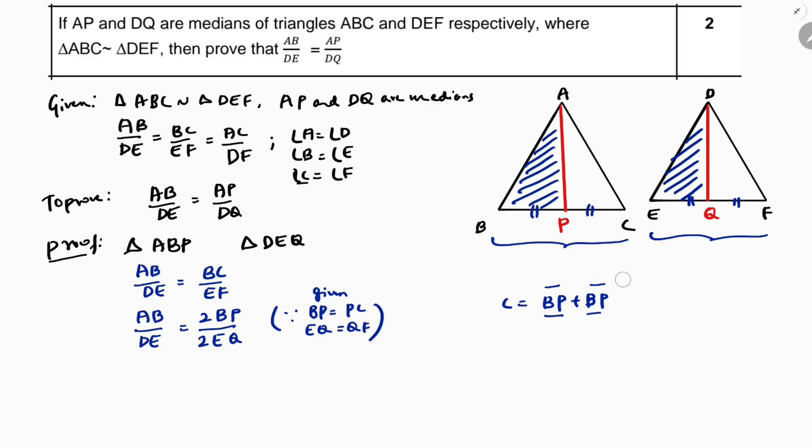So, in the same way, the other one. EF I can write as 2EQ. Now, 2 and 2 cancel. So, AB by DE equals BP by EQ.